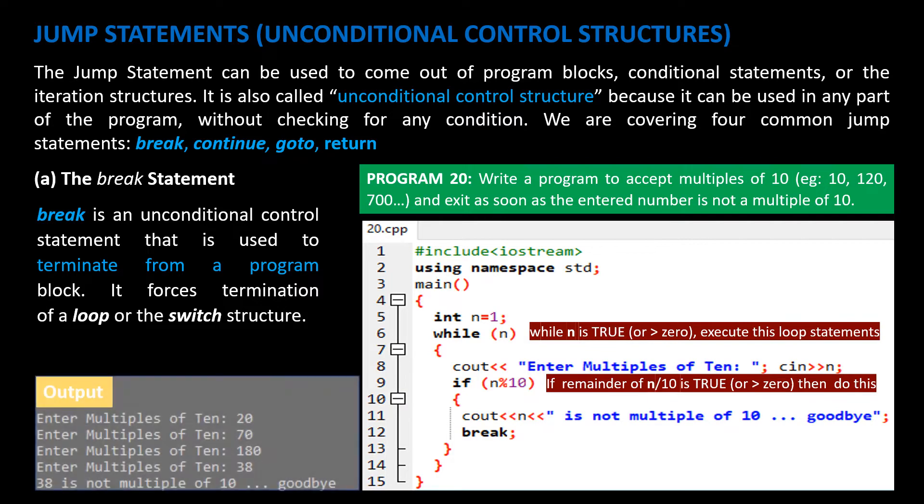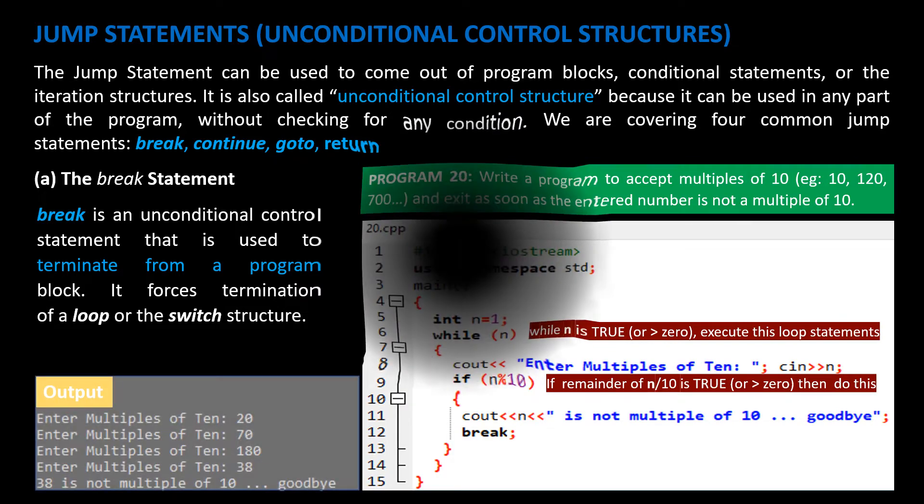The continue statement. Continue is an unconditional control statement that skips rest of the instructions within a loop and forces the next iteration. We will check its application in a simple program.